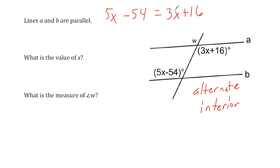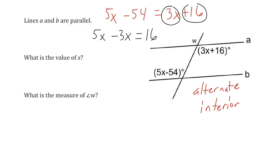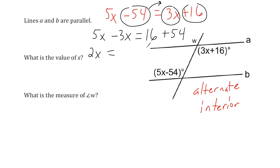We take 3x and move it to the other side, leaving 5x minus 3x on the left, and we take the constant minus 54 and move it to the right as plus 54. So we have 2x on the left — because 5 minus 3 is 2 — set equal to 16 plus 54, which is 70. Dividing both sides by 2, we get x equals 35.